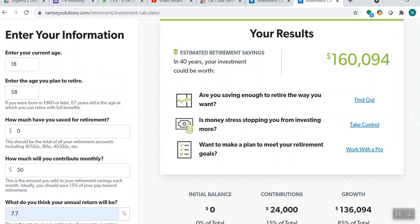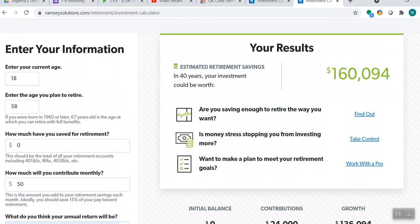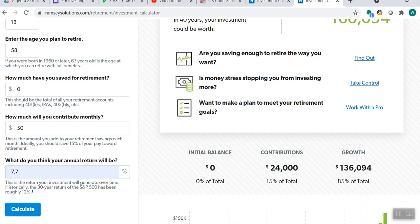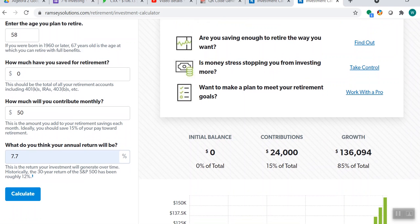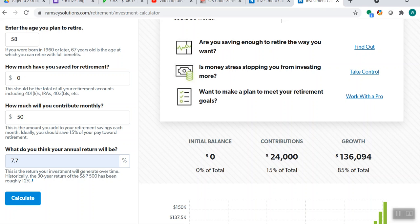If you just start investing when you turn 18 years old and you start investing simply $50 a month at a 7.7% return, you're going to have $160,000. And that's at the low cost of you investing $50. Now, where did all that money come from? Here's our initial balance, $0. Your $50 a month is going to wind up being a grand total of $24,000. And your growth, you're going to make $136,094 just off of $50 a month.